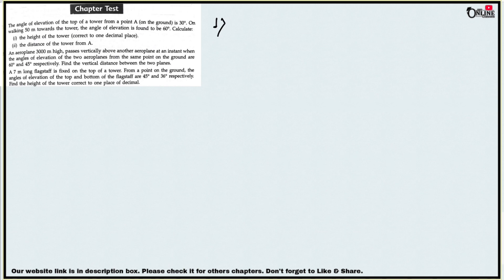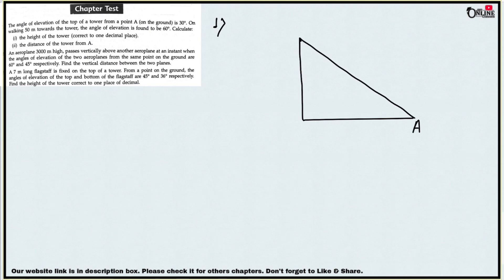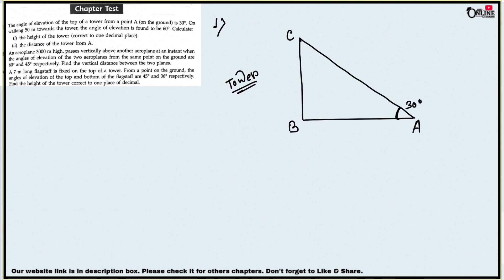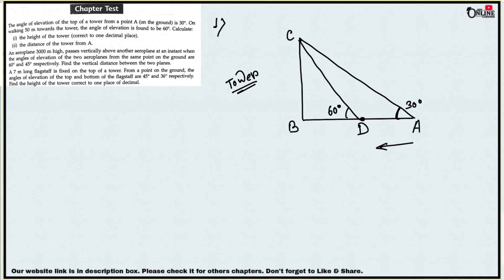The first problem: the angle of elevation of the top of a tower from point A is 30 degrees. Suppose this is the base and point A is here. The angle of elevation from point A to the top of the tower equals 30 degrees. BC is the tower. On walking 50 meters towards the tower, the angle of elevation is found to be 60 degrees. Calculate the height of the tower and the distance of the tower from A.